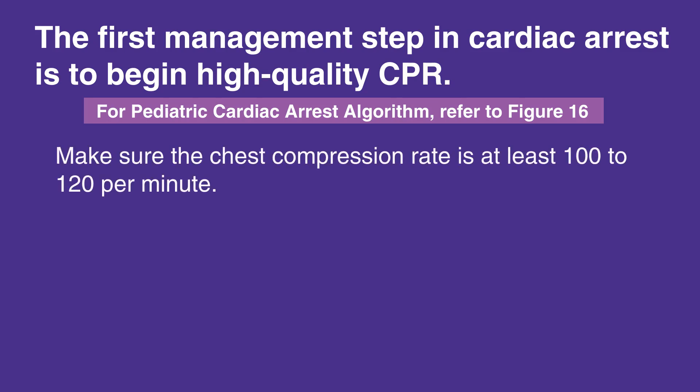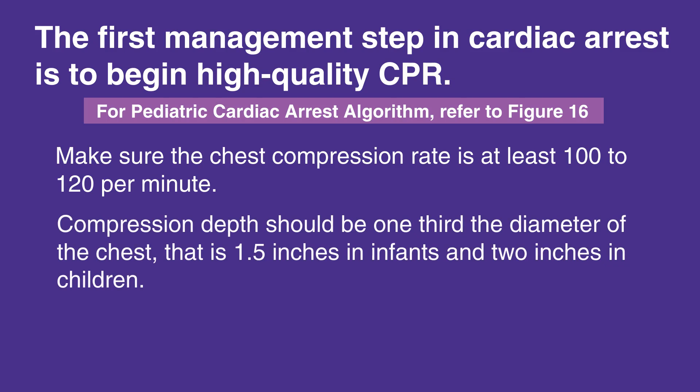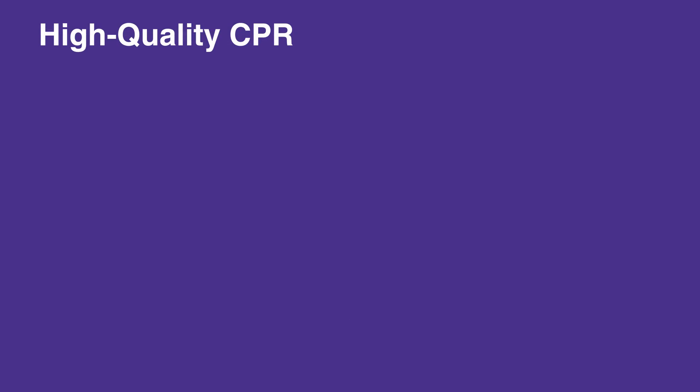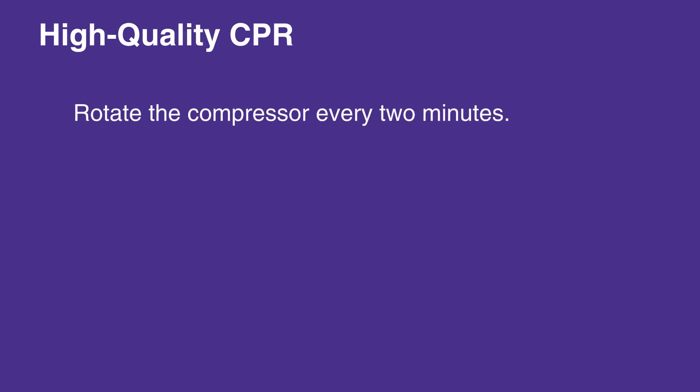make sure the chest compression rate is at least 100 to 120 per minute. Compression depth should be one-third the diameter of the chest — that is, 1.5 inches in infants and 2 inches in children. Minimize interruptions and do not over-ventilate. Additionally, rotate the compressor every 2 minutes.